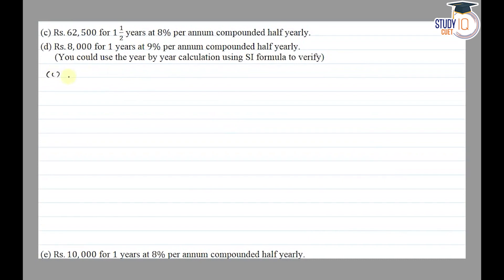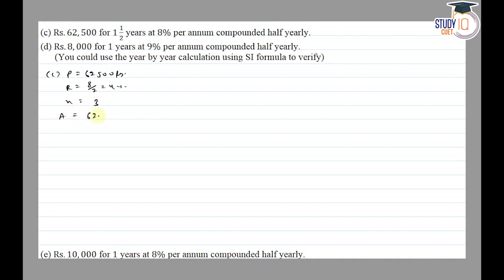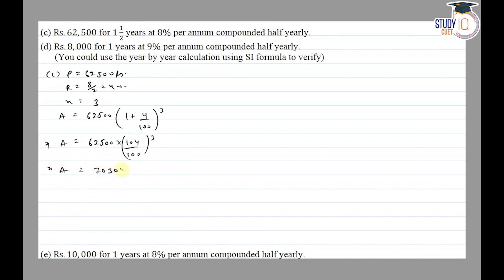Part C: Principal given is ₹62,500, compounded half yearly. So half yearly rate is 8 divided by 2, equal to 4 percent, and number of half-yearly periods for 1 and a half years is 3. Amount comes to ₹70,304 and CI will be Amount minus Principal, which is ₹7,804.